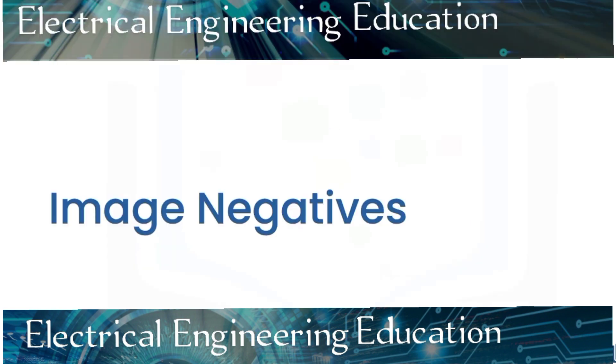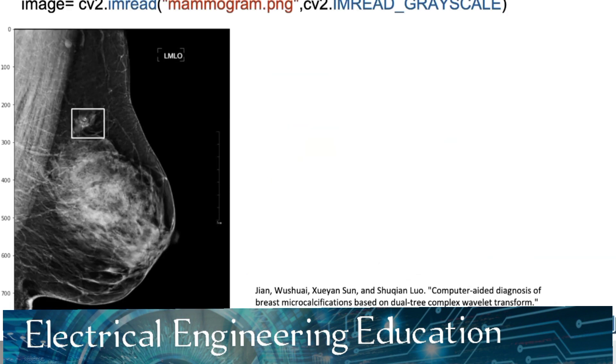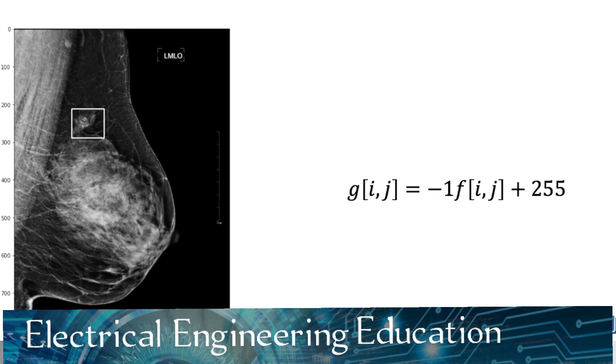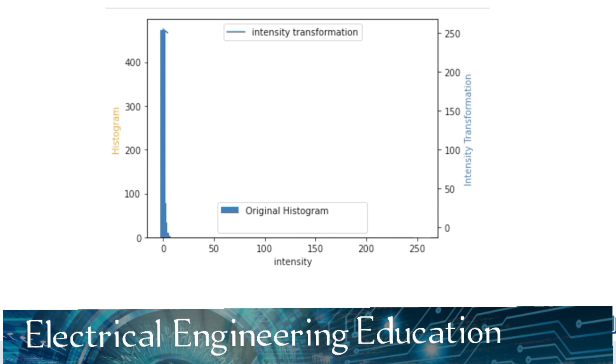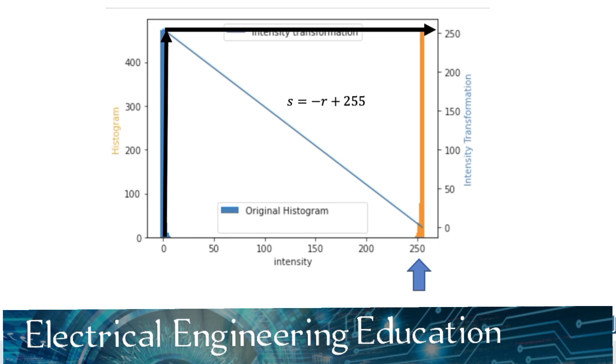Image negatives is where we reverse the intensity levels of an image. Consider the following image. It's difficult to make out details. Applying the following transform will reverse the intensity levels of the image. We can apply the transform as an array operation as follows. The new image looks like this. We see the details are much more evident. The following plot shows the histogram. We can overlay the transform as a function of the intensity. The function maps the lower intensity values of zero, one, to 255, 254, and so on. We can plot the value of the histogram on the horizontal axis. We see this flips the histogram.